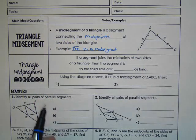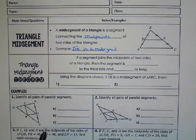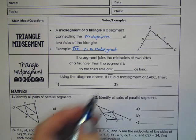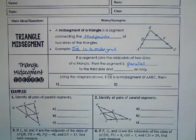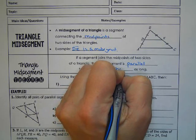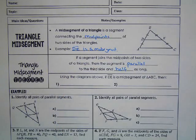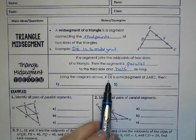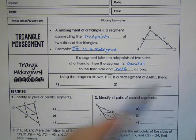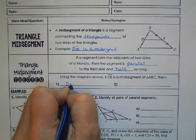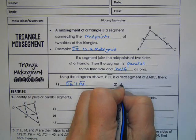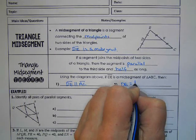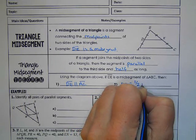The midsegment theorem says if a midsegment joins the midpoints of two sides of the triangle, then the segment is parallel to the third side and half as long. So if DE is a midsegment of triangle ABC, then DE is parallel to AC, and DE equals one-half of AC.